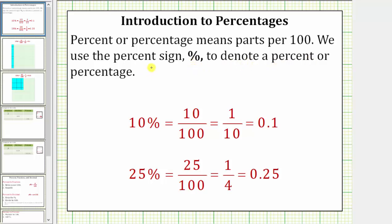For example, if there is a 10% chance it will rain today, we use this notation here for 10%, which means there are 10 chances out of a total 100 chances that it will rain today. And therefore, we can also express 10% as a fraction — 10 hundredths — which simplifies to one-tenth, or as a decimal, 0.1.